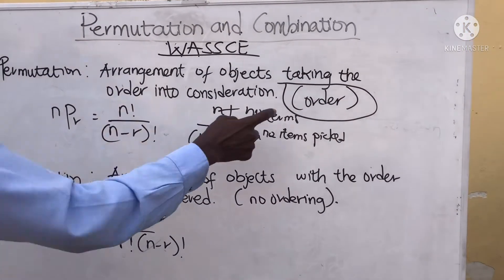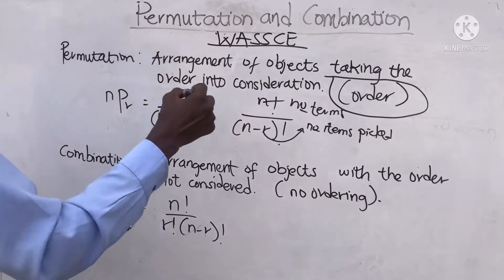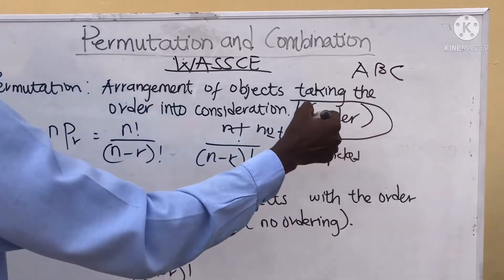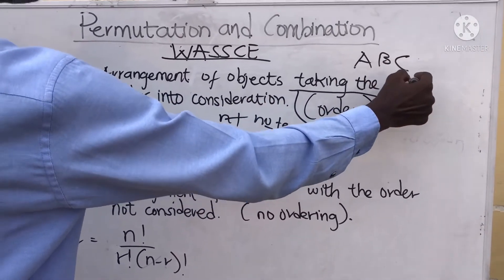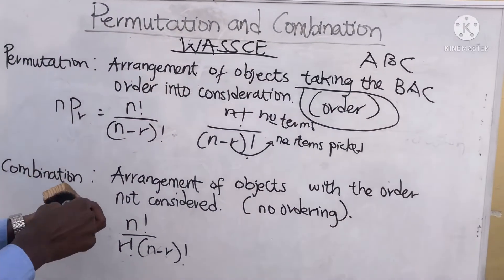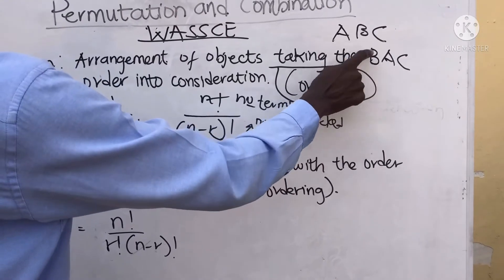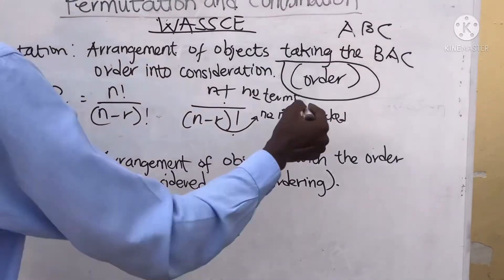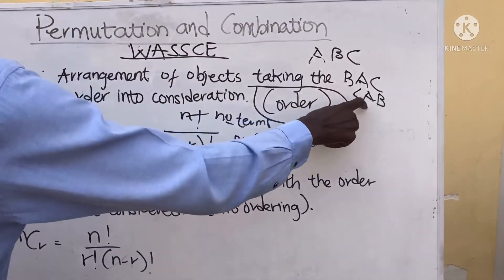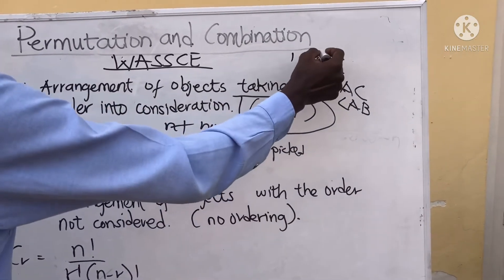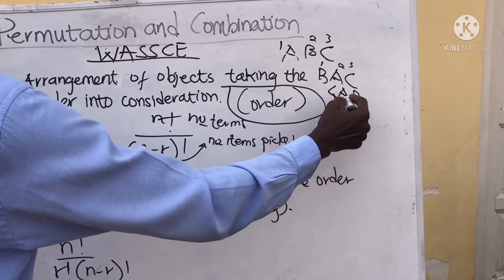In permutation, the order is considered — the order is important. For example, if you are given items A, B, C and you write them as B, A, C, the order is very important. A, B, C is not the same as B, A, C — these two are different altogether. Likewise, C, A, B is also different, although they contain the same items A, B, C. The arrangement differs: here A is position one, B is two, C is three; there B is one, A is two, C is three; and in another, C is one, A is two, B is three.